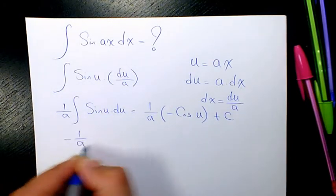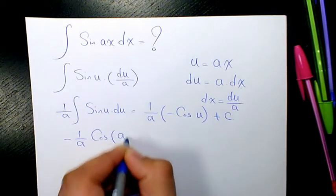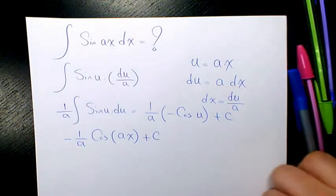So the final answer is negative one over a times cos(ax) plus a constant.